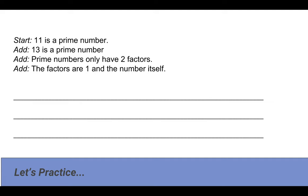Remember, the fourth step is to have students share their combined sentences with other students. I would have pairs of two get into a group with two other sets of two, and between the six of them they would share their sentences. Also have them rank the sentences from the best combining down to the weakest.